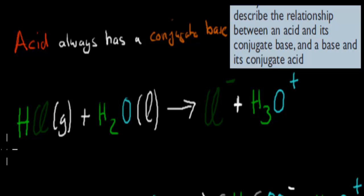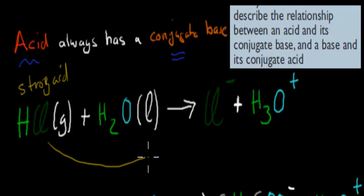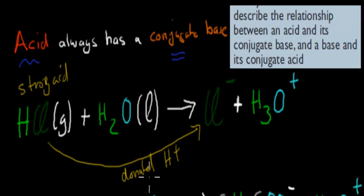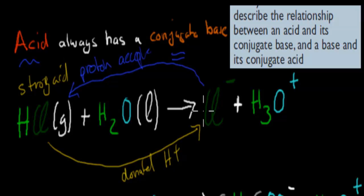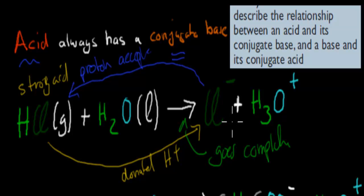Talking about acids first — an acid will always have a conjugate base. We've got hydrochloric acid, which is a strong acid. It's an acid because you can see here it has donated a hydrogen, so it acts as an acid. In the reverse reaction, if it were to go backwards, the chlorine ion would accept the hydrogen from hydronium ions and become hydrochloric acid again — a proton acceptor. But because this is not a reversible reaction — it goes to completion — the reversible reaction never really happens.